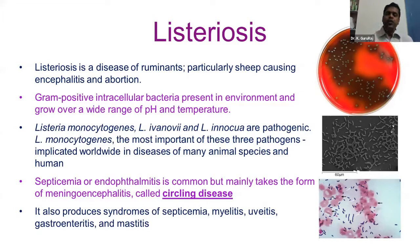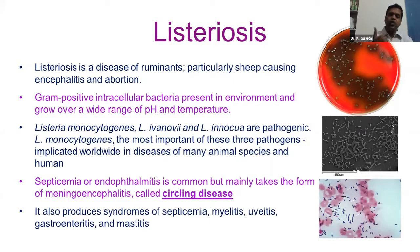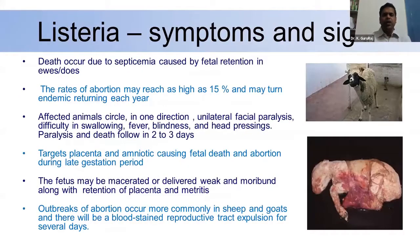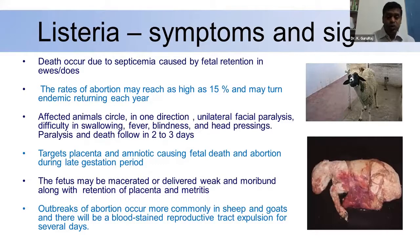For differential diagnosis, Listeriosis has more clinical manifestations compared to agents like Brucella, which typically causes only infertility or abortion. Chlamydia typically causes abortion with no retention of placenta, whereas there is retention of placenta in Brucellosis. Death due to septicemia is especially common in Listeriosis, whereas mortality is not very common in Brucellosis.